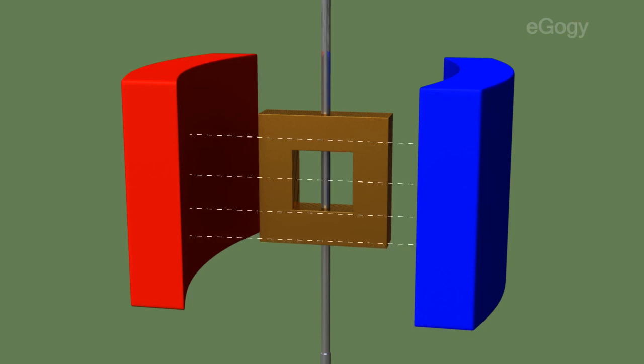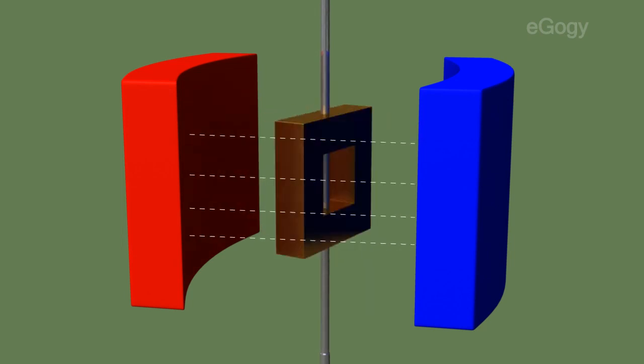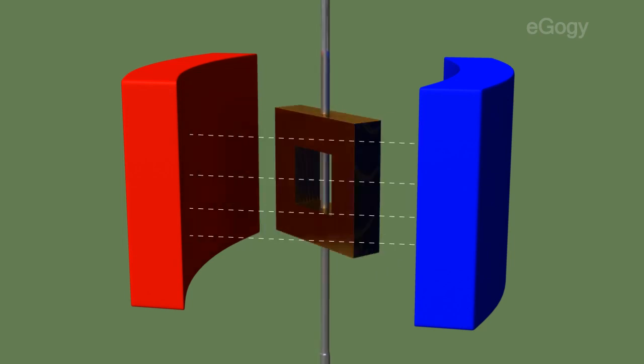When electricity passes through the armature coil, the armature and field magnets get magnetized. And due to the attractive and repulsive interaction between them, the armature coil rotates.